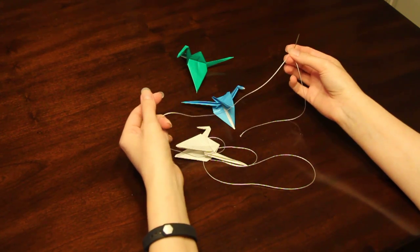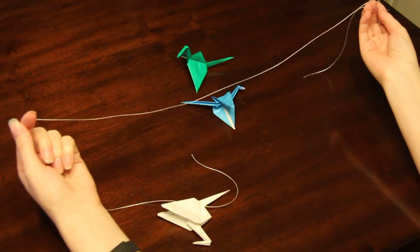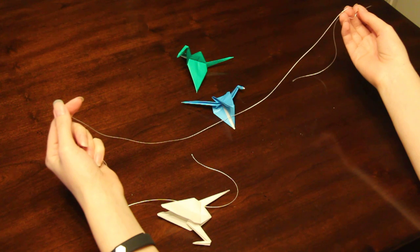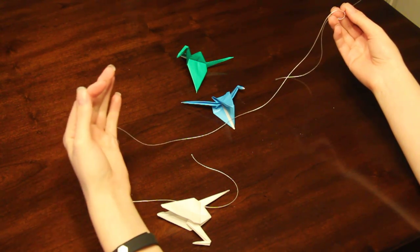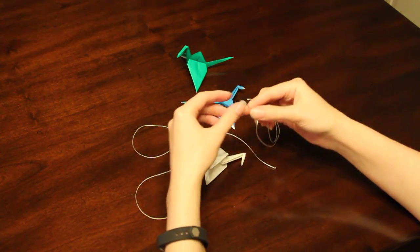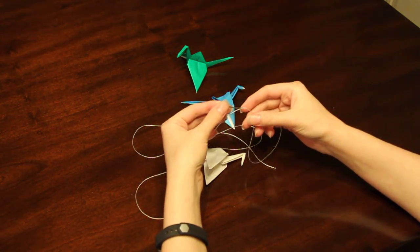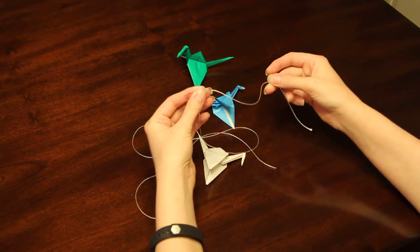I'm going to show you how to thread your cranes. Each of you in your packet got some string. We want to fit anywhere from about 9 to 12 cranes on a string. You're going to pick up a needle, and you want the head of the needle to be big enough for the string to fit through.